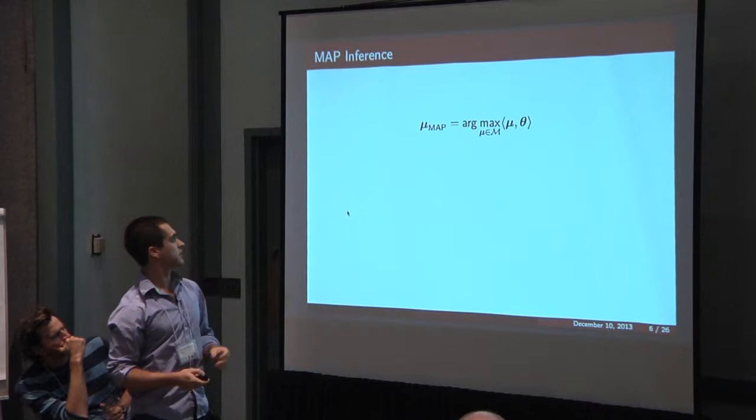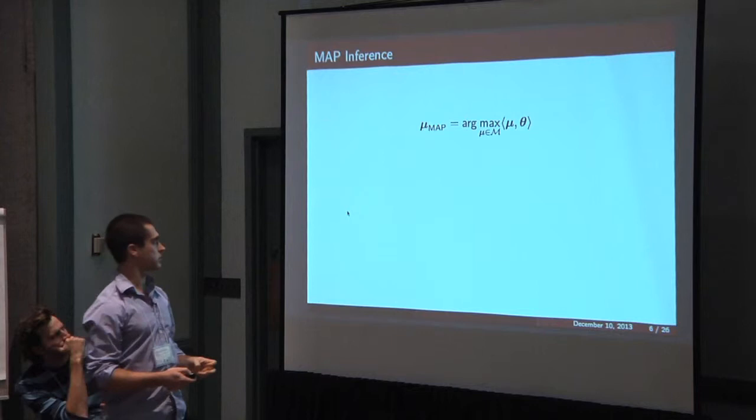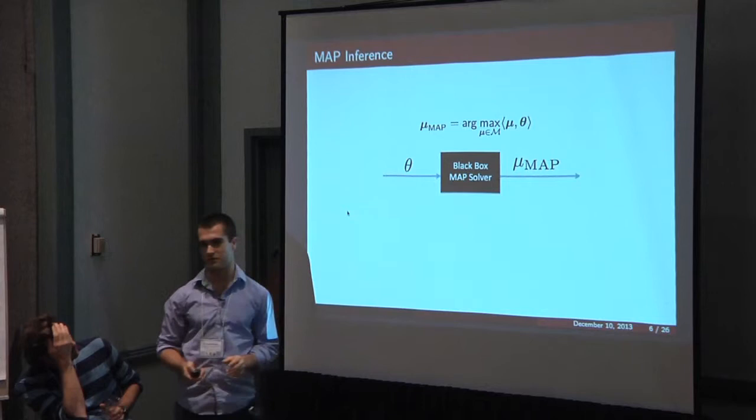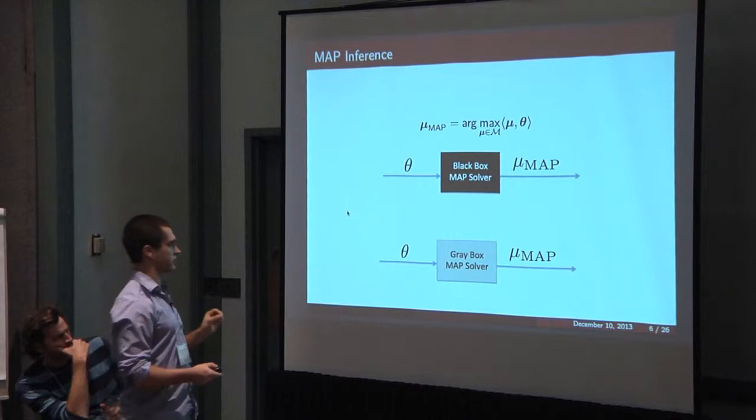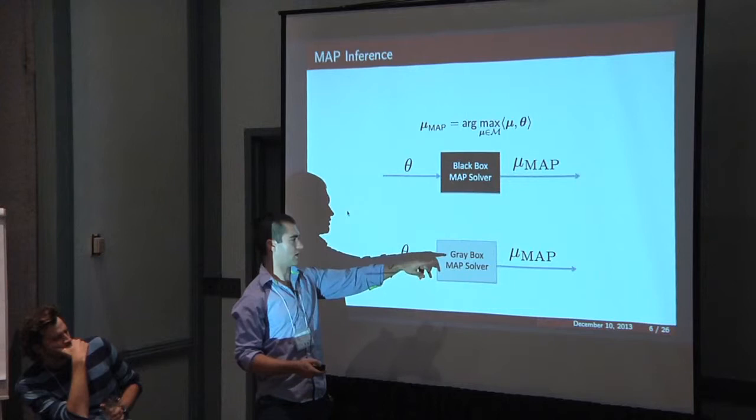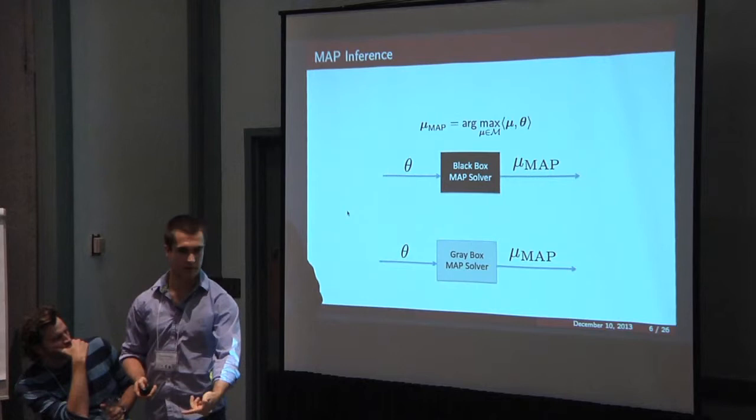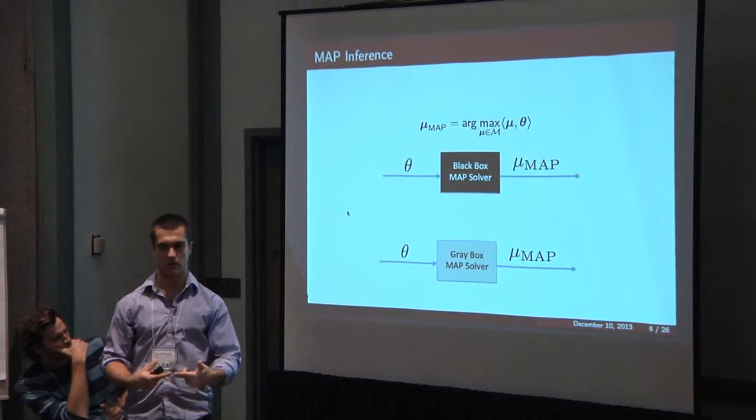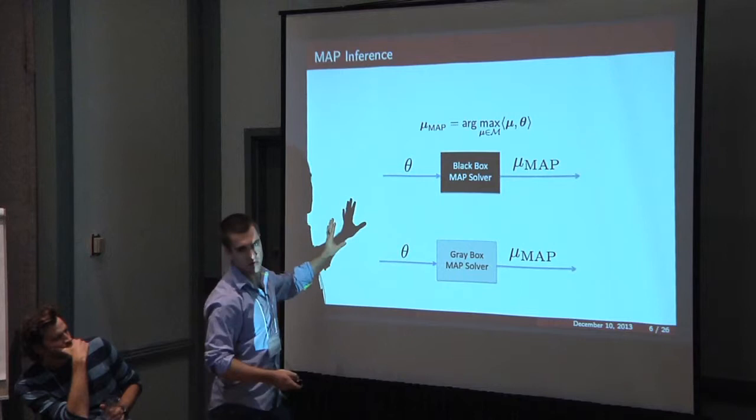A related problem is MAP inference which is just finding the maximum probability configuration mu. You can think of this as a black box. I mean hundreds of PhD theses have been written on this problem. There are really good black boxes for it. Another thing to know is that you can sort of think of it in terms of a gray box too, because there are relaxations of MAP inference that are used in these solvers that are basically valid relaxations of the marginal inference problem too.